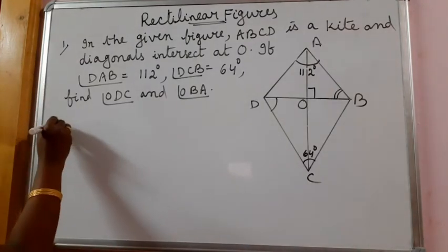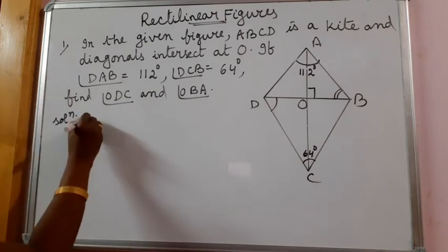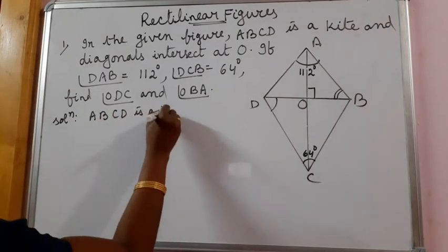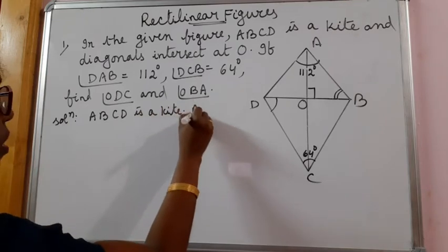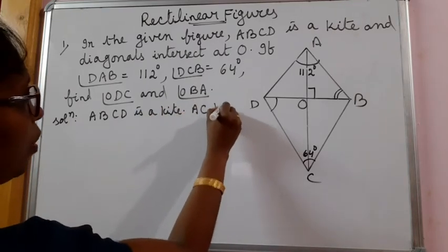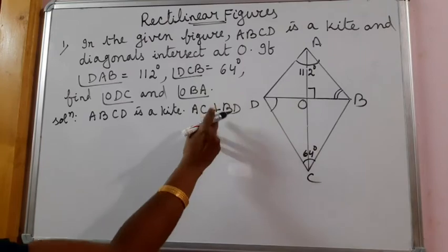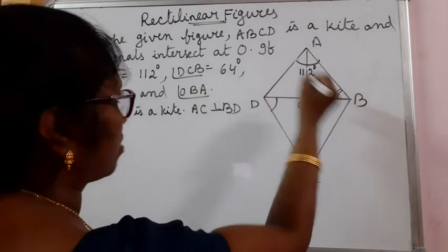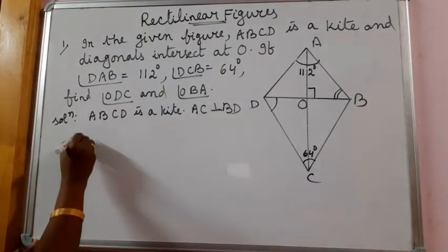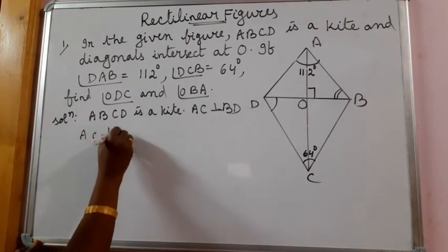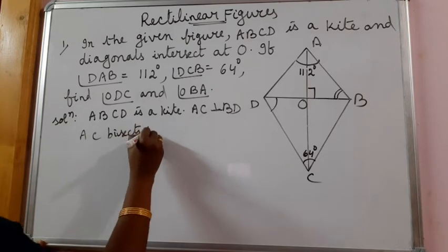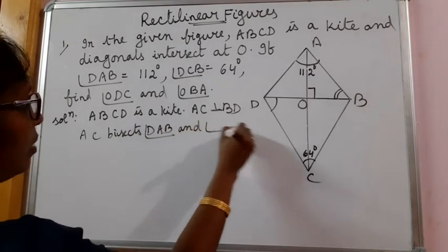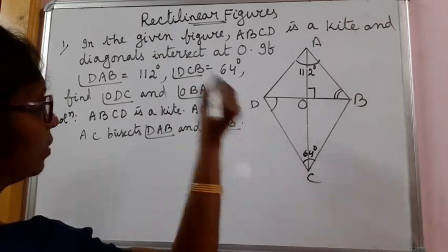So let me start. ABCD is a kite. Therefore, AC is perpendicular to BD. That means, symbolically I wrote AC perpendicular to BD. This is 90 degrees. AC bisects angle DAB and angle DCB.